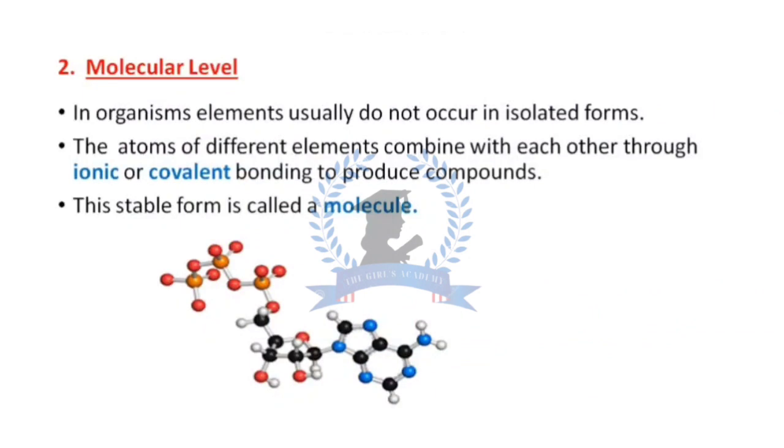Now we move towards the next level, which is the molecular level. First, let us discuss what is a molecule. All the atoms that are present in an organism or the elements cannot be found in isolated form. The atoms of different elements combine with each other through ionic or covalent bonding to produce compounds. Here in this particular figure you can see different atoms—this red one, orange one, white, black, and blue. These all are atoms of different elements. These elements combine together by forming either ionic bond or covalent bond and then they form a molecule.